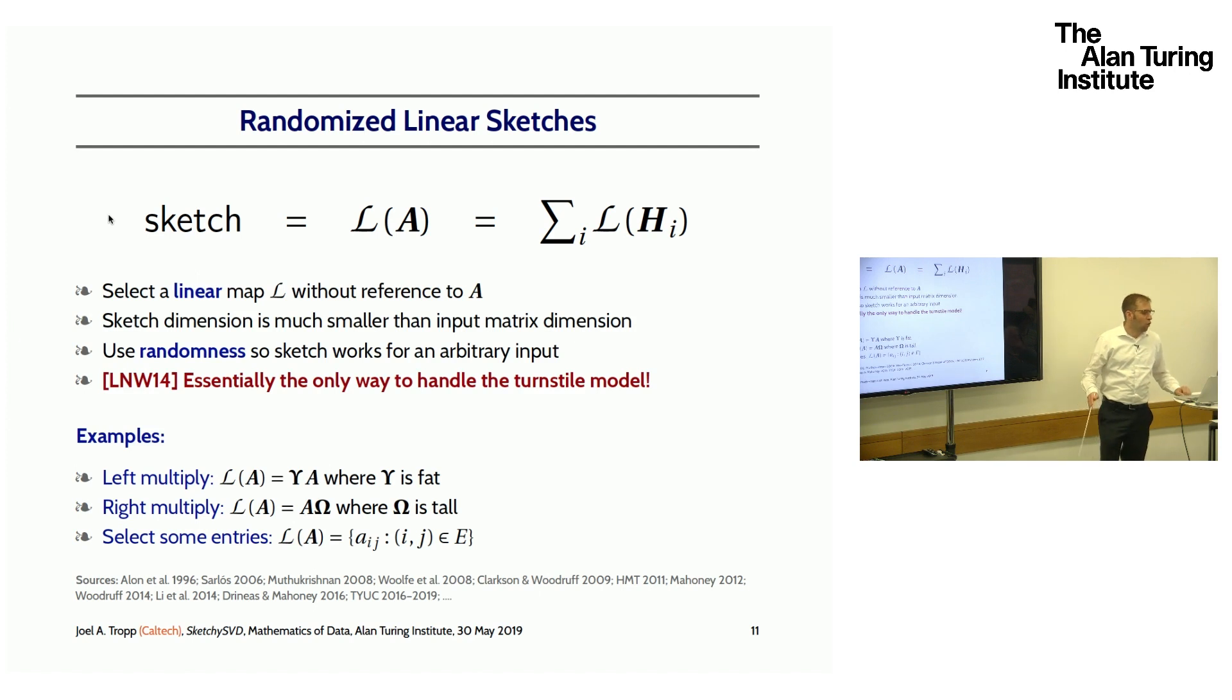The randomness allows us to make claims like, for a fixed input A, the sketch is effective with high probability because L has nothing to do with A. The other great thing about linear sketches in the context of the turnstile model is that if A is presented as a sum of innovations, because the map L is linear, if we want to make a sketch of A, we can just sketch each of the innovations and add them up instead. Each innovation is sketched separately and compiled into our sketch. There's a nice paper by David Woodruff and some collaborators arguing that this is essentially the only way to deal with this turnstile streaming model.